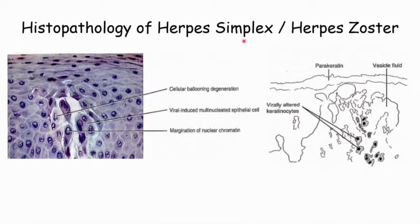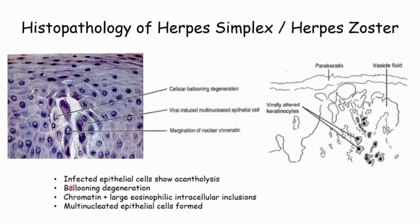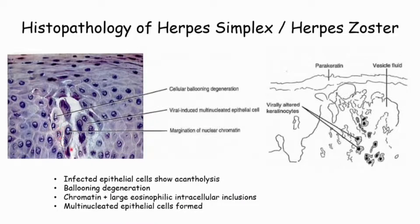Histopathology of Herpes Simplex Virus. The infected epithelial cells exhibit acantholysis, nuclear clearing, and nuclear degeneration, which is termed ballooning degeneration. There is also condensation of chromatin around the periphery of the nucleus, forming margination of nuclear chromatin.